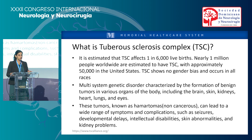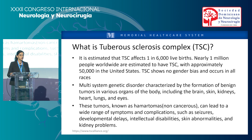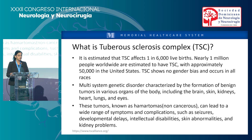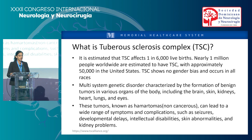These cause complications including seizures, developmental delay, intellectual disabilities, skin abnormalities, and kidney problems. It's estimated that tuberous sclerosis affects one in 6,000 live births. Nearly 1 million people worldwide are estimated to have TSC, approximately 50,000 in the U.S., and it shows no gender bias and occurs in all races.